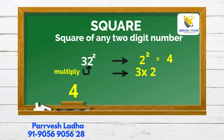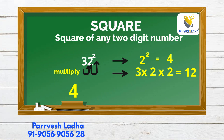The second step is to multiply the first digit and second digit number, then multiply with the power number 2, which equals 12. We write 2 and carry 1.